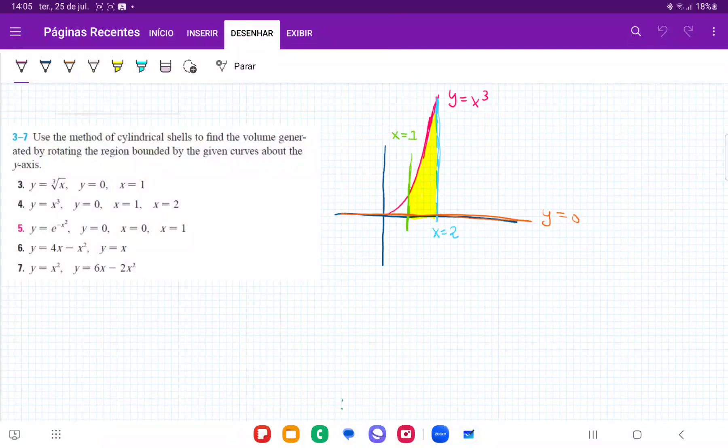So for number four, we want to take the area bounded between these curves. I've drawn them in, that's the curve y equals x cubed here, and then y equals zero, x equals one,